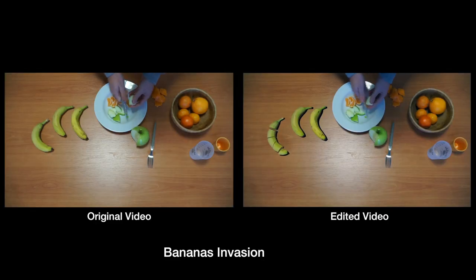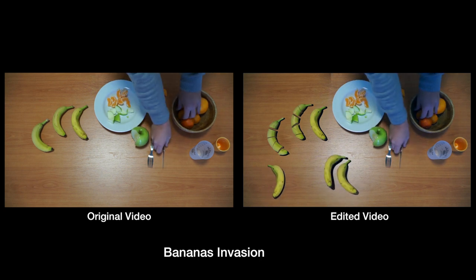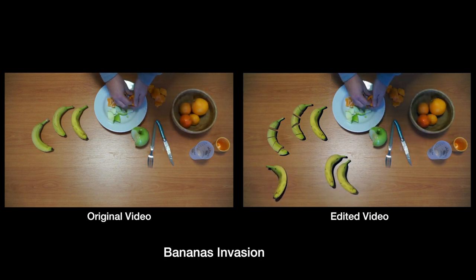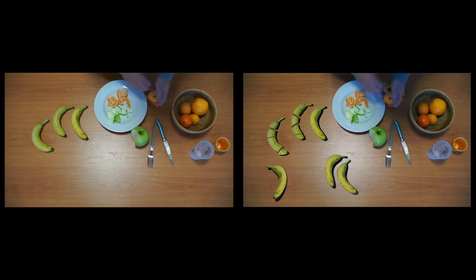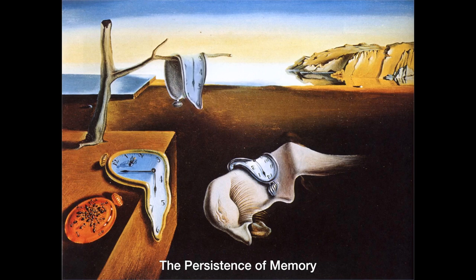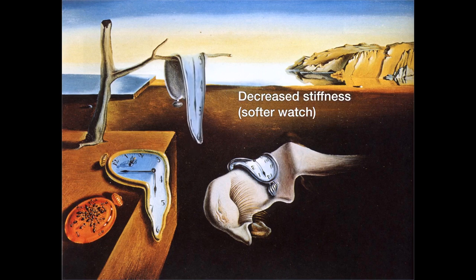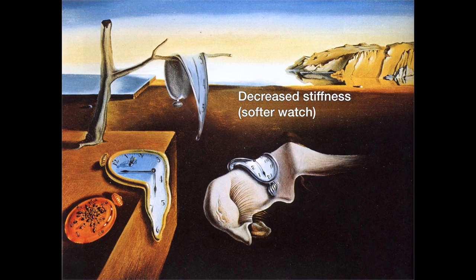Our system enables topological changes producing cut bananas, and handles rigid and deformable collisions in real time. In this example, we demonstrate how one can use our system to edit a painting. The user can stretch and twist the swatch in 3D, and interactively decrease its stiffness to make it even more melted.